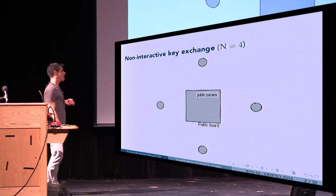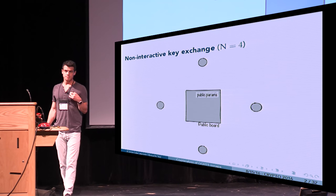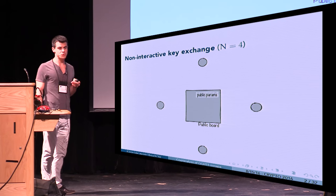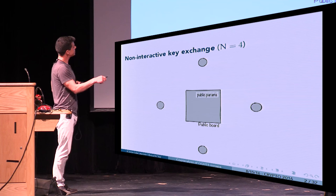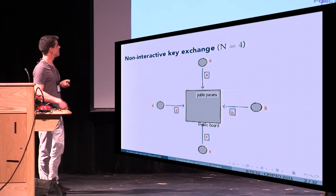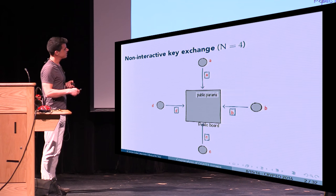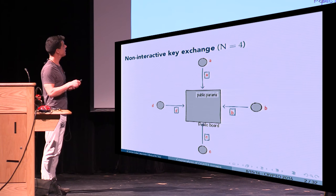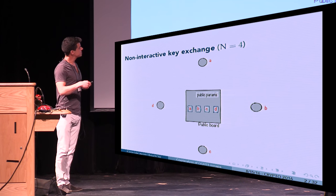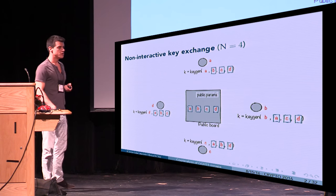Let's start with multilinear map applications. One of the first applications multilinear maps were described for was non-interactive key exchange for more than four players. You have four players and a public board with some public parameters. Each player generates a secret value and encodes it in a public encoding, broadcasting it to the public board.